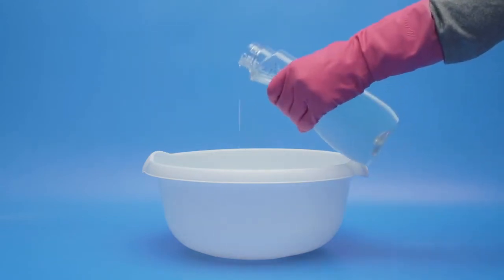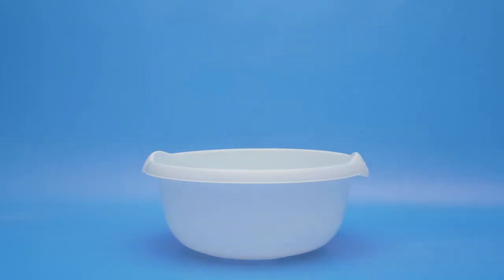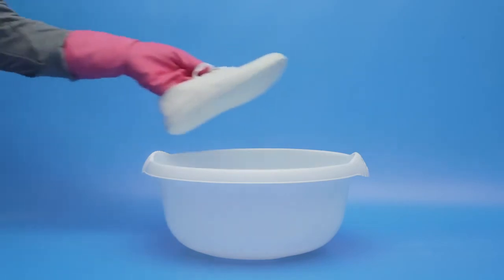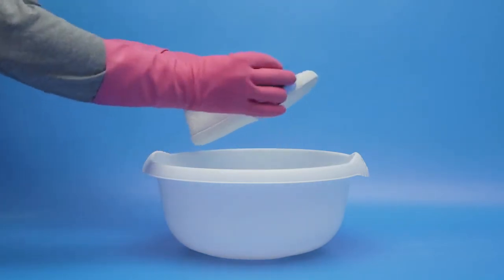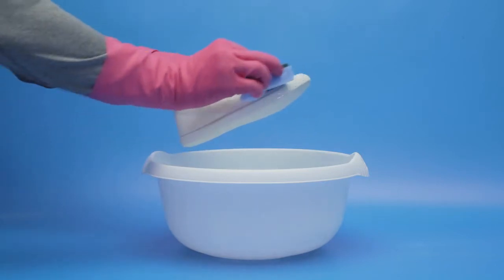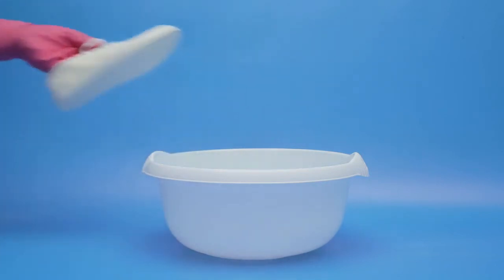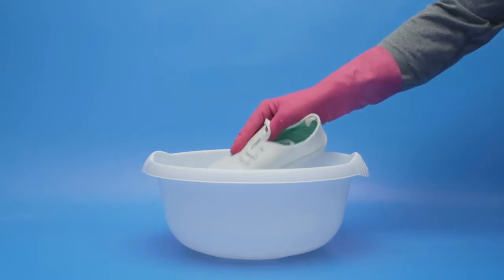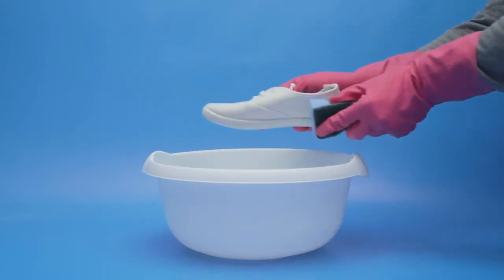A liquid detergent suitable for delicates like Persil Silk and Wool is ideal. Using a toothbrush or washing up sponge, scrub the outside of the shoe whilst holding it above the bucket of water. Gently dip the shoe in the water to wash off the dirt and continue scrubbing.